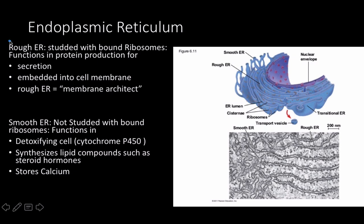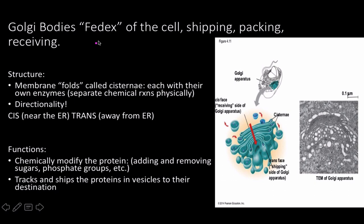For the endoplasmic reticulum there are two types: rough ER and smooth ER. The rough ER is called that because it's studded with bound ribosomes, meaning it makes proteins for secretion or embedding into the cell membrane — some people call it the membrane architect, since glycoproteins used to identify a cell originate from the rough ER. The smooth ER is not studded with ribosomes; its function is mostly detoxifying the cell. Cytochrome P450 is a good example of an enzyme found there. It also synthesizes lipid compounds such as steroid hormones — estrogen, testosterone — and plays a role in calcium storage, which is important when we discuss neurons and muscle function.